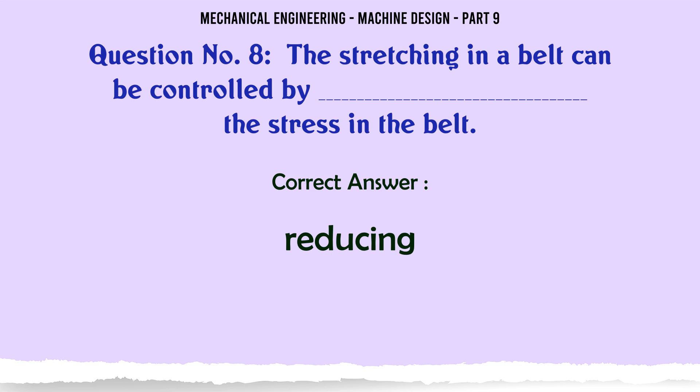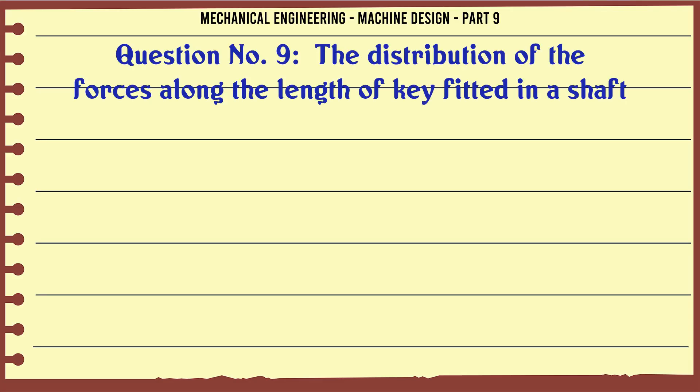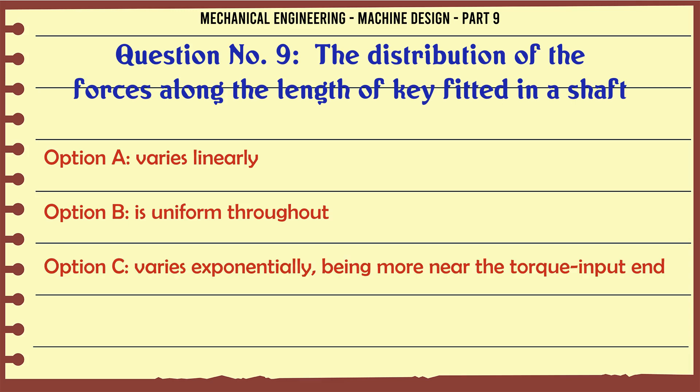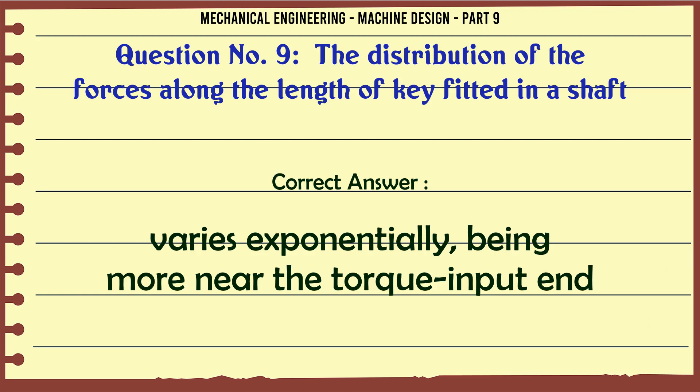The distribution of the forces along the length of key fitted in a shaft: A. Varies linearly, B. Is uniform throughout, C. Varies exponentially being more near the torque input end, D. Varies exponentially being less near the torque input end. The correct answer is Varies exponentially being more near the torque input end.